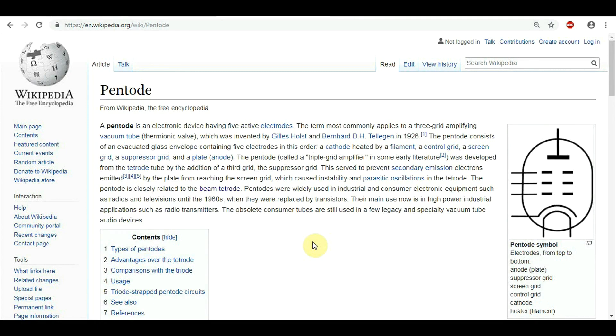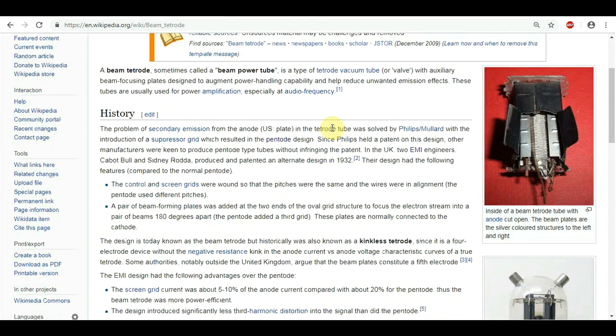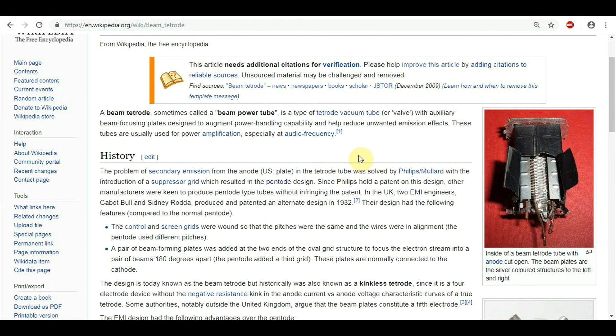What's the difference between a pentode and a beam tetrode? The pentode has five elements: the anode, the cathode, and three grids. The beam tetrode has the anode and the cathode, two grids, and then it has a third grid which isn't really built like a grid. It's built with a couple of plates to concentrate the beam of electrons, hence the name beam tetrode.